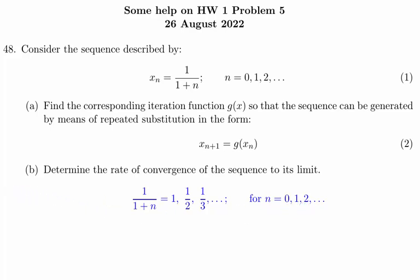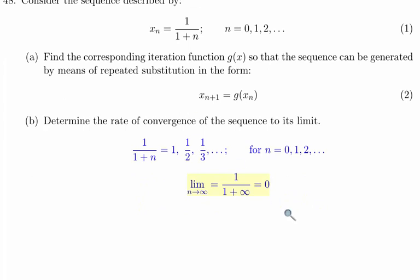We can see that this sequence is eventually going to converge to 0 as n approaches infinity. Next, let's look at part a of the problem.